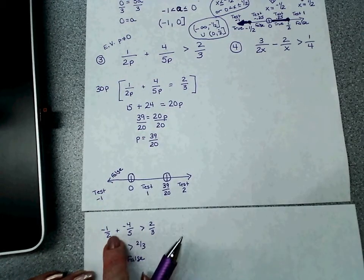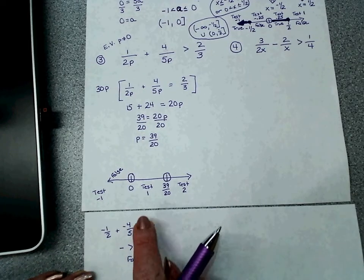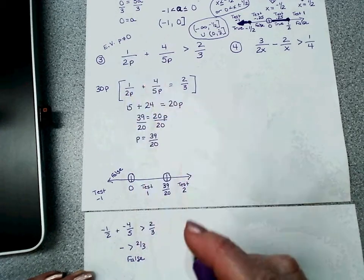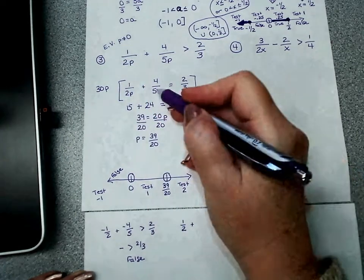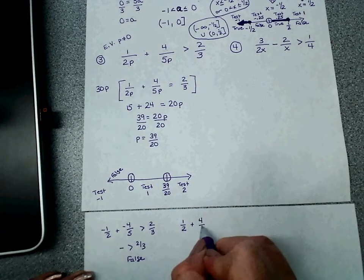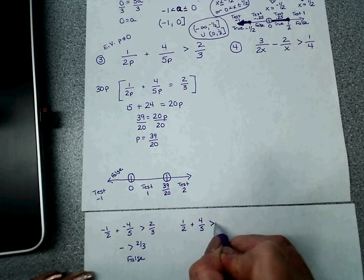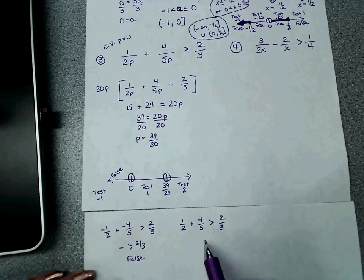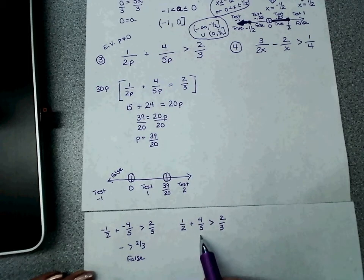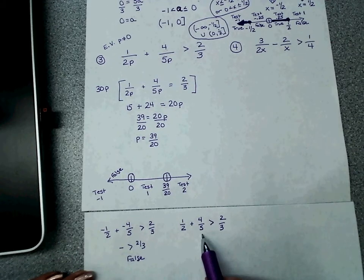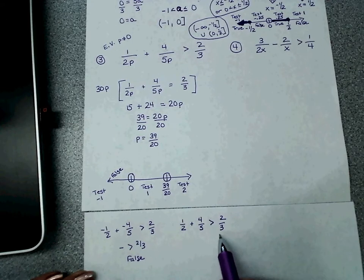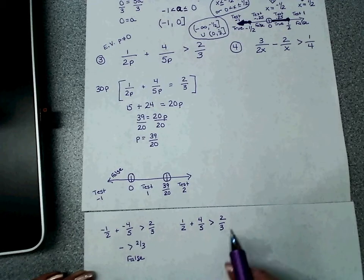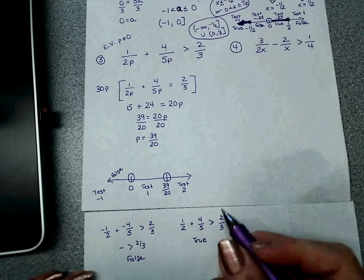Alright, got to test 1. So I'm coming back here. So that's going to be 1 half plus 4 fifths, and the question is, is that greater than 2 thirds? Now again y'all, I'm using common sense. 4 fifths, if it was a decimal, is 0.8. 2 thirds, if it was a decimal, is 0.6 repeating forever. 0.8 by itself is bigger than 0.6, so this one has to be true.